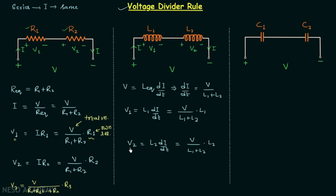We can write V1 and V2 directly by understanding the pattern. V1 equals the total voltage divided by L1 plus L2, multiplied by the own inductance L1. Similarly, V2 equals V over L1 plus L2, multiplied by the own inductance L2. When we have N inductors connected in series and want the voltage across the fifth inductor, V5 equals V over the equivalent inductance L1 plus L2 all the way to Ln, multiplied by the own inductance L5.